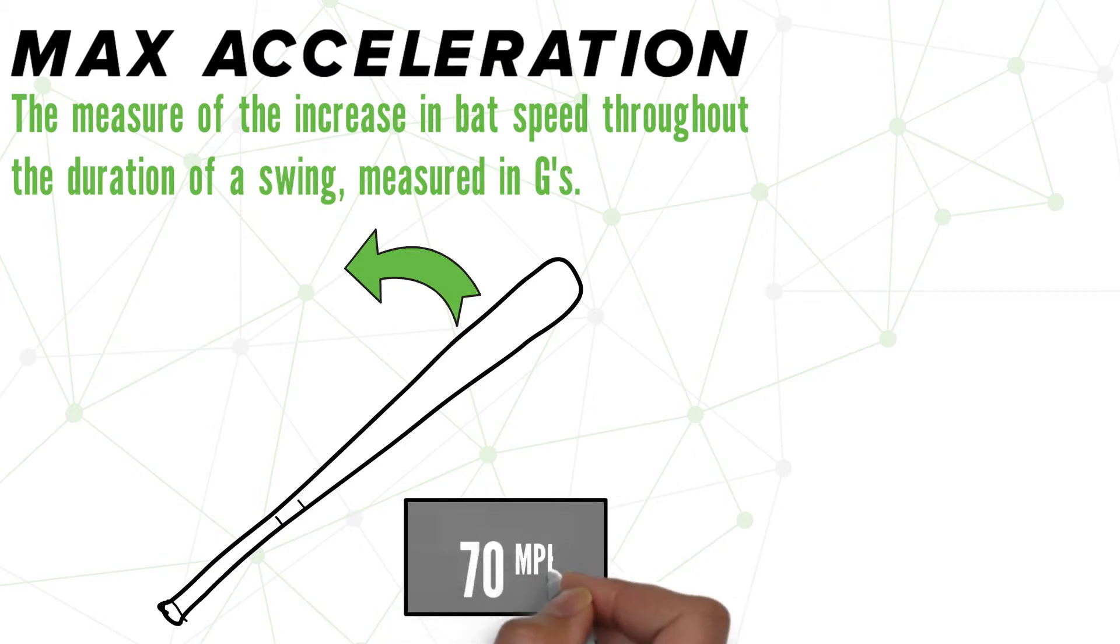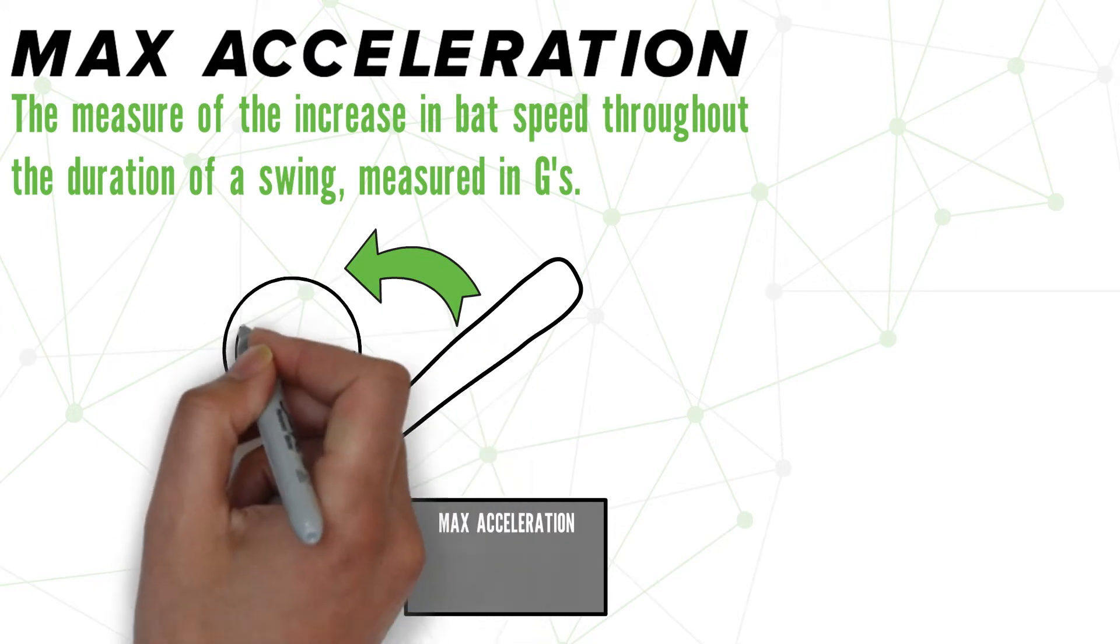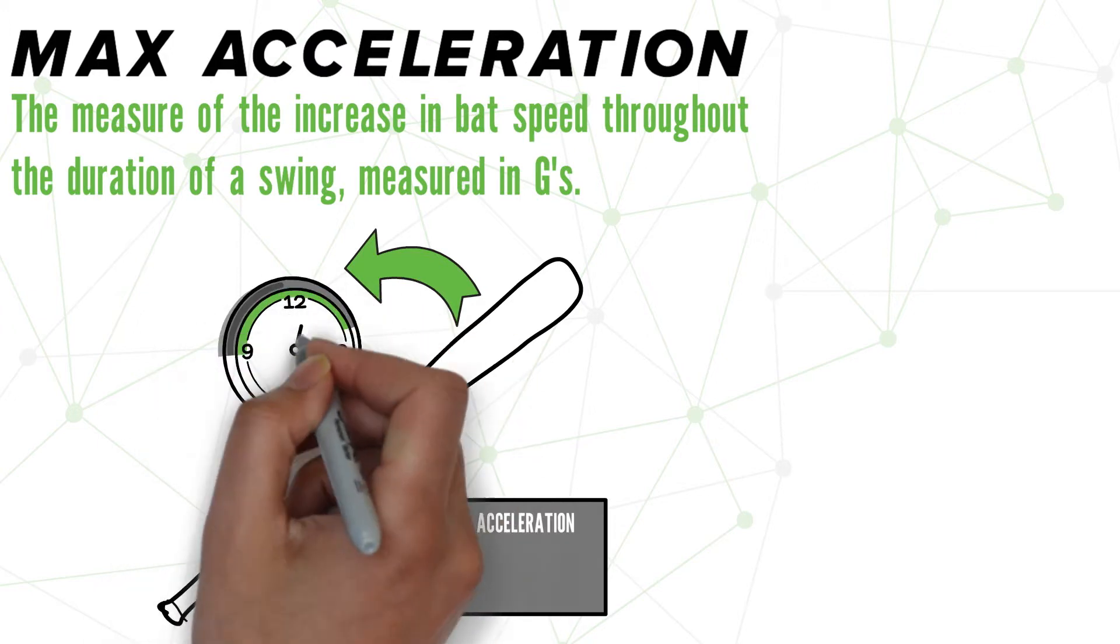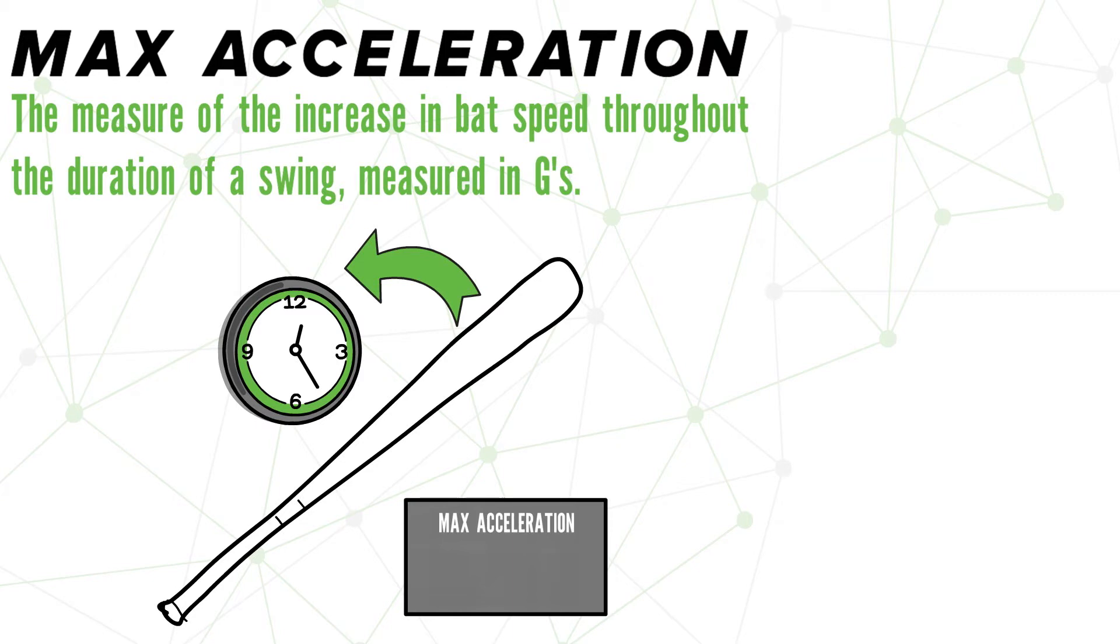To be clear, this metric is not the measure of how fast a bat is moving, that would be max barrel speed. Acceleration is measuring how quickly a hitter can reach that max speed. Good numbers here are important because the quicker you can accelerate that bat, the more time you have to make a decision to swing, or adjust to an off-speed pitch.